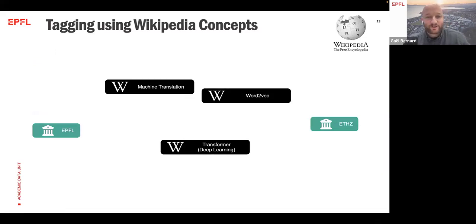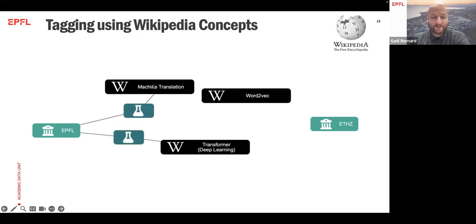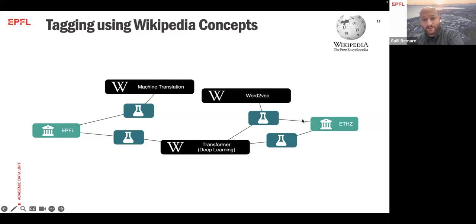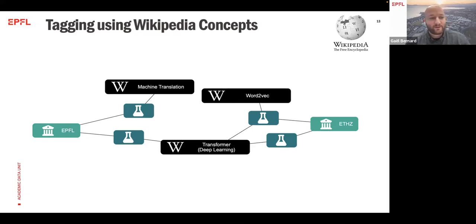Let's say we have two different institutions — and by the way, this is only for illustration purposes. We have EPFL here and our big sister ETH Zurich. When we publish academic work, they are tagged on OpenAlex with Wikipedia concepts. So we know, for instance, that this paper is related to machine translation. And if we look at ETH, it might be some other concept. Now if you start doing some graph analysis, you might get insights like: those two different institutions work on the same concept, but maybe they didn't collaborate together. This is the kind of insight you can infer using this kind of graph.